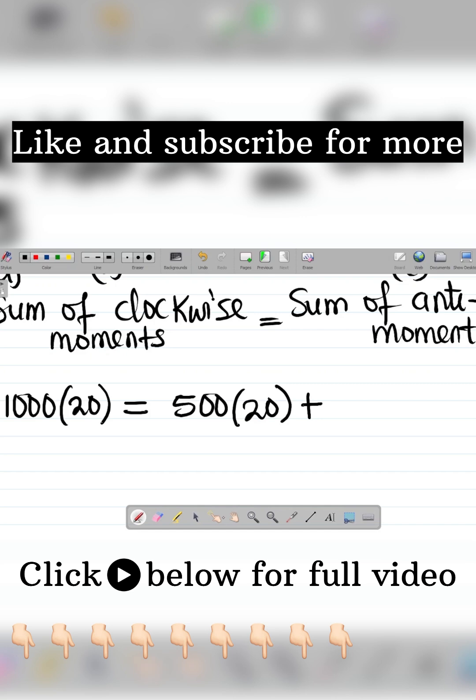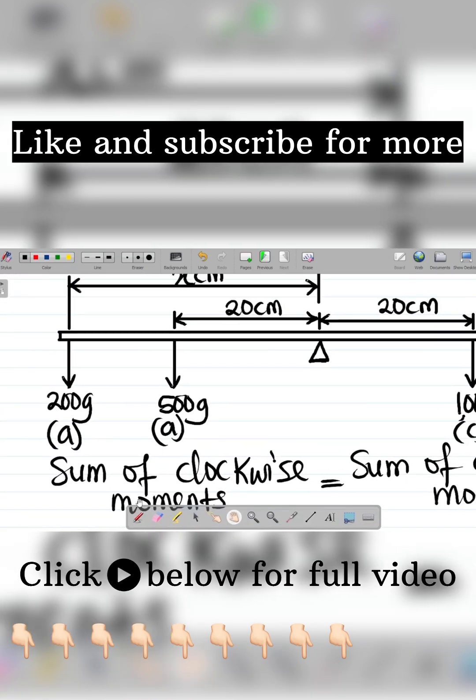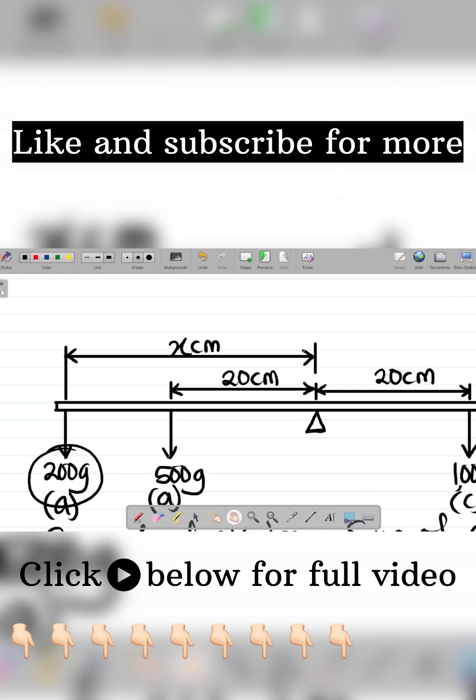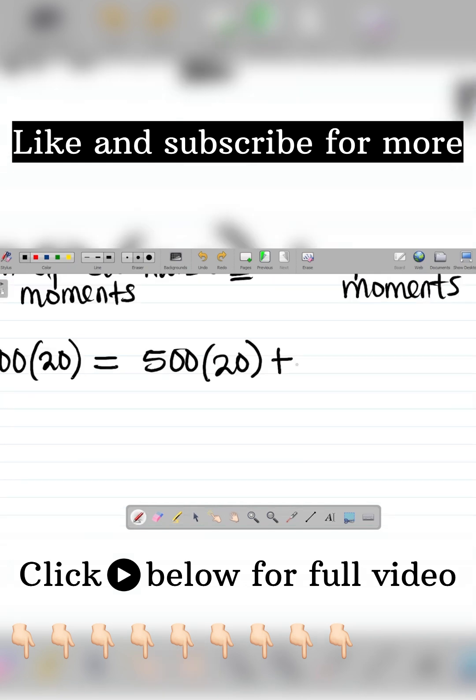Let's also add this. We have a second anti-clockwise which is the 200 gram mass, and the distance from the 200 grams to the fulcrum is x. So it becomes 200 times x.